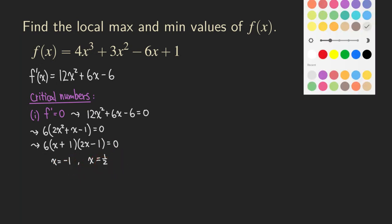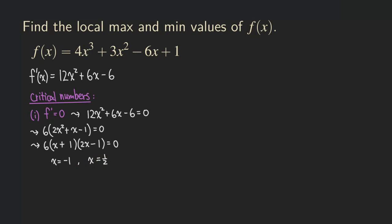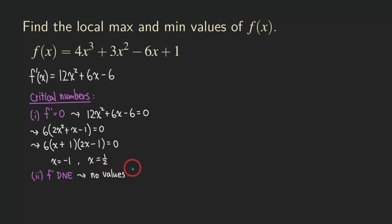What about the other case for finding critical numbers — where f prime does not exist? Because this is a polynomial, we cannot find any values for which f prime does not exist. So there are no additional values from this sub-case. We have our two critical numbers: negative one and one half.